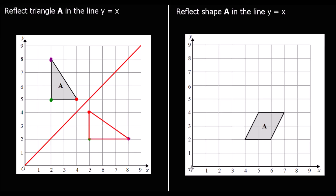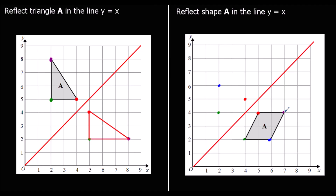Here's another one to reflect in the line y equals x — the line that goes through (1,1), (2,2), (3,3), and so on. Again, we take each point one by one and go the same distance away from the mirror line on the other side. So two away, two away; and one and a half, one and a half. Joining up these points gives the reflected shape.